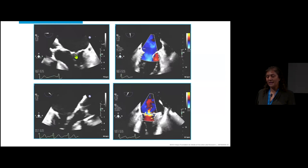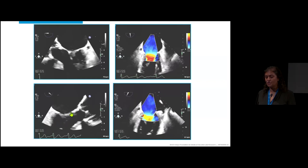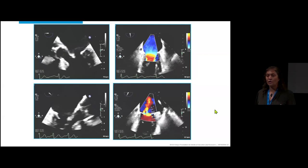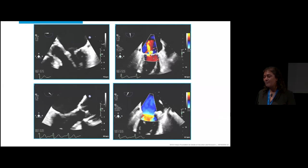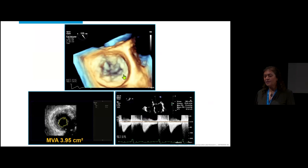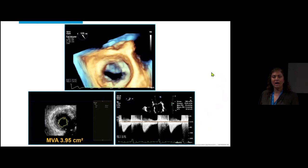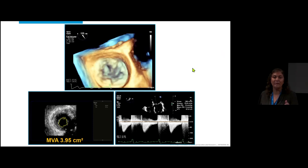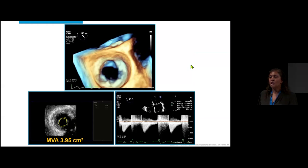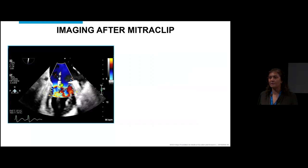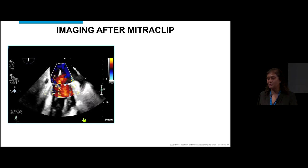At TEE in the cath lab, the mitral valve is thickened — no prolapse, no flail segment — with moderate-severe MR quantitatively, and her LVEF was low normal. On 3D, you see mitral annular calcification circling the valve. The valve area measured 3.95 cm² with a gradient of 3 mmHg. After several measurements averaging around 4 cm², the interventionalist decided to try a clip. Before full deployment with the arms up, the mitral regurgitation had already dropped to mild — a fantastic result for MR reduction.